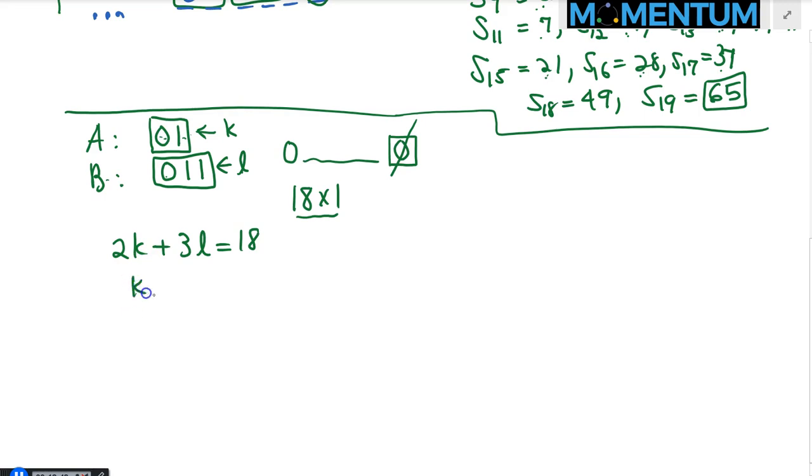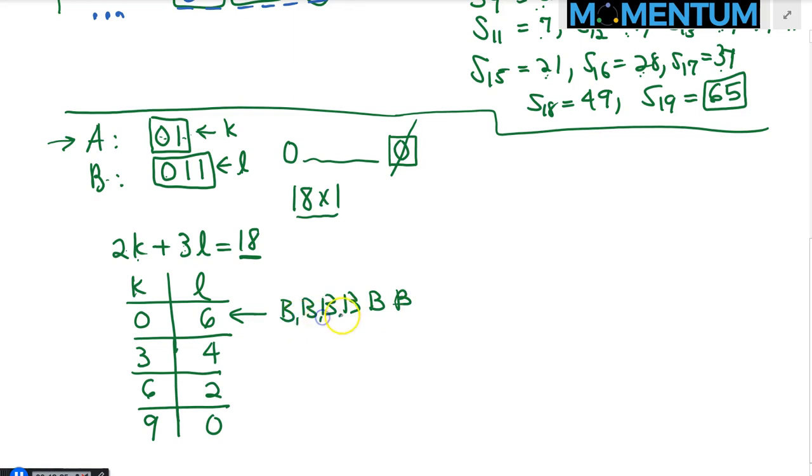If you start with K of the A tiles and L of the B tiles, because we want to tile an 18 by 1 sequence, we need K of these—each one has length 2—so we would get 2K plus the Bs—we have L of them, each one has length 3, so 3L. This thing better be 18. I will do casework based on that. For K and L, I need to hit 18. L can be 6, in which case K would be 0. L can be 4, so K would be 3. Or L can be 2, so K would be 6. And finally, L can be 0, in which case you are using only the As to tile it, and that would be K equals 9.